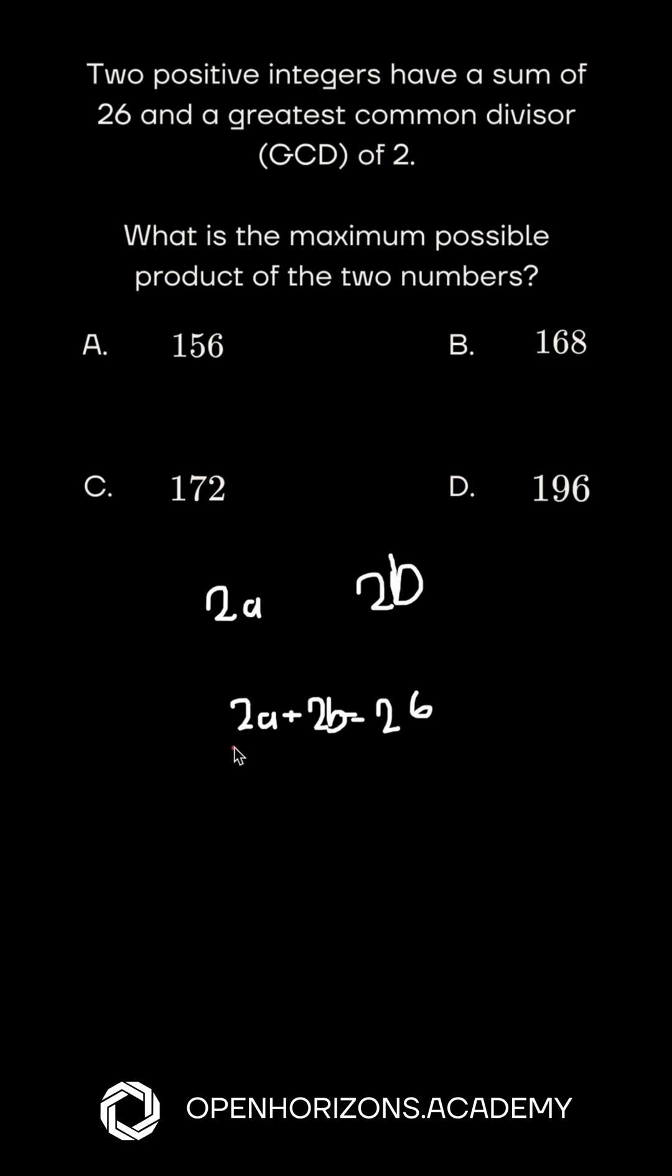Now let's split this by 2 and that will lead us with A plus B equals 13. So now we want to maximize the product and that would be 2A bracket 2B bracket equals 4AB.